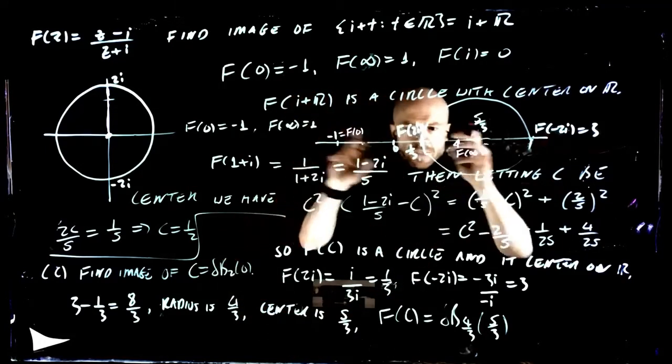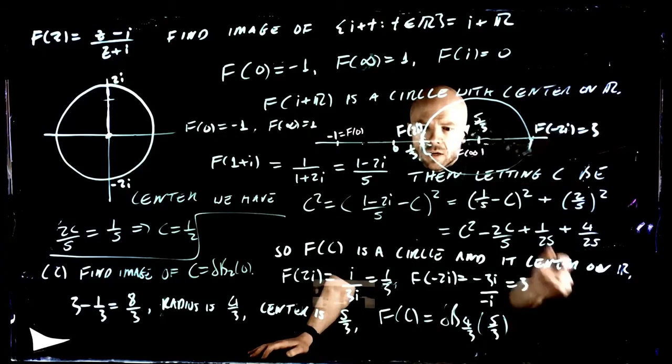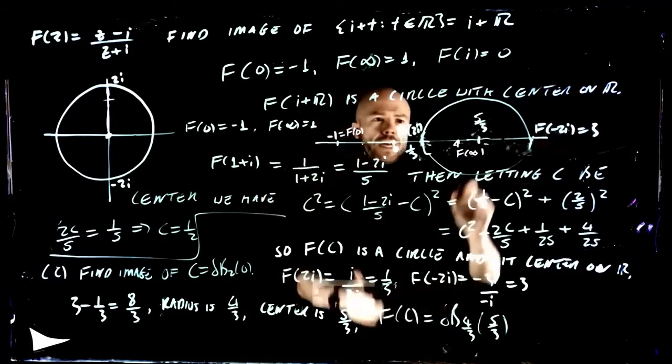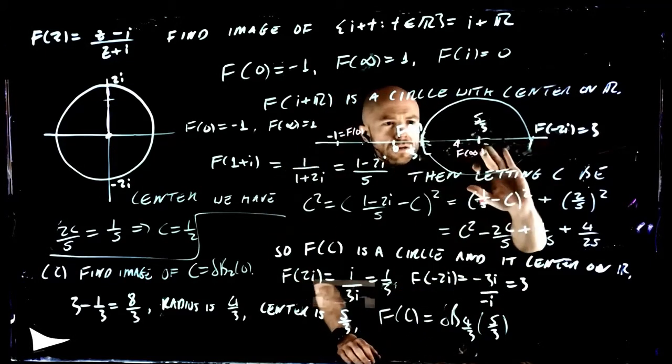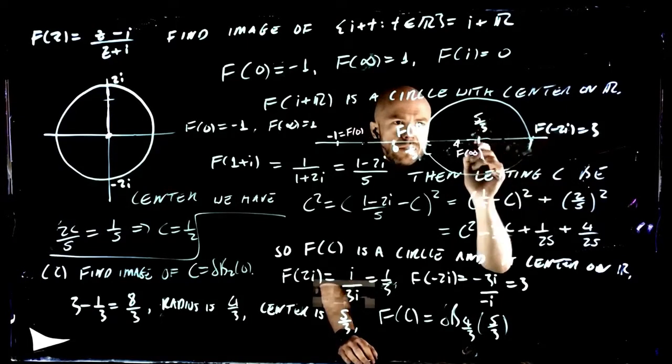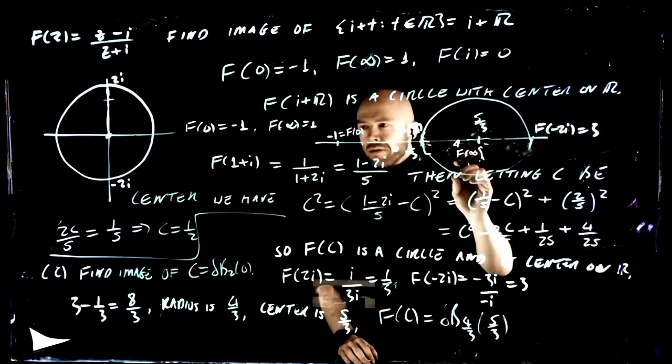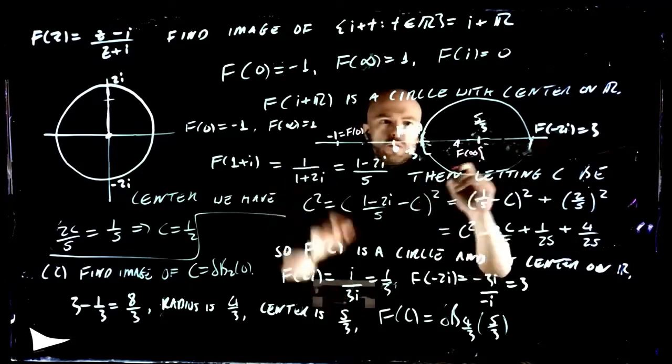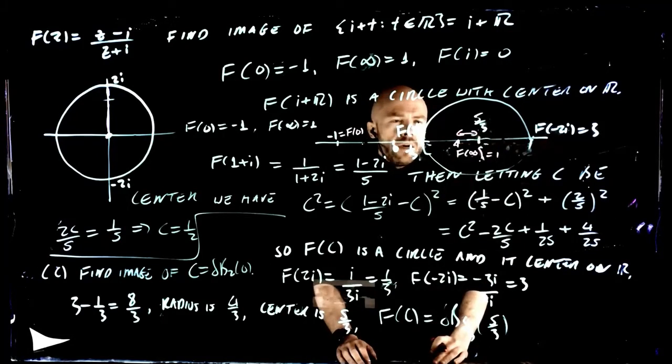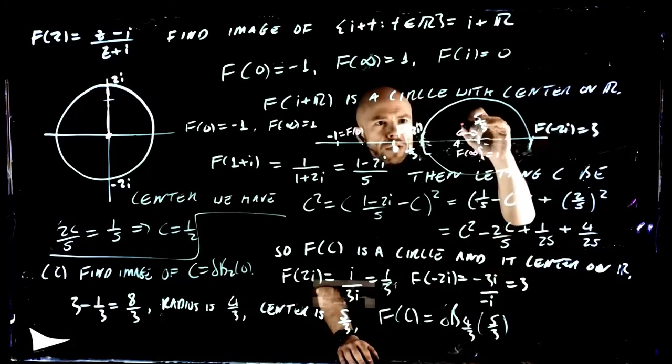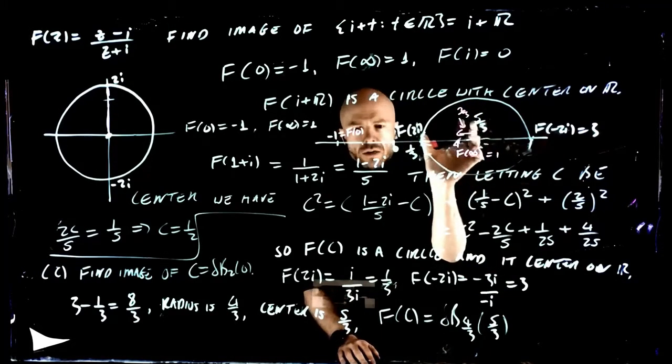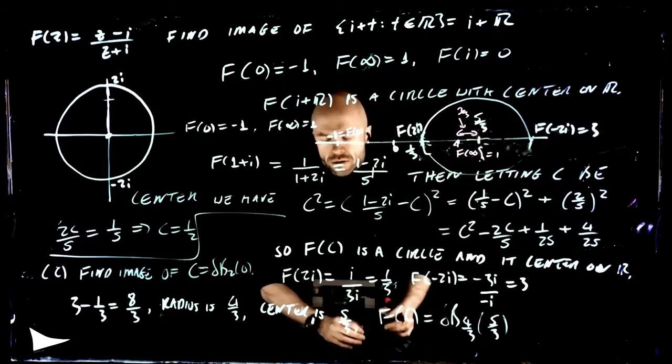So these things do indeed look like they are symmetric. At least on the right line. And if this is correct, then we can actually check that the distances are doing what we expect. So what is this distance here? f of infinity is 1. This distance here is just 2 over 3. And the radius of the circle is 4 over 3.